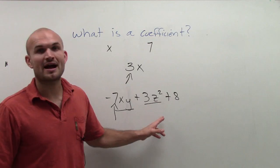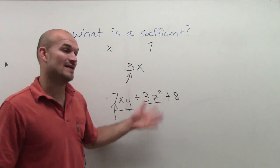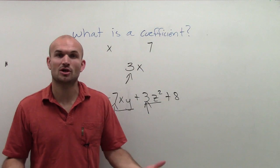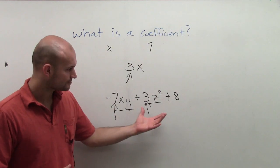Here, my variable factor is z squared. The number factor is 3. Because remember, factors are your numbers that multiply to give you your term.